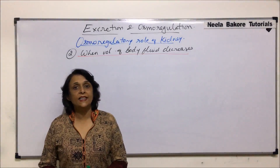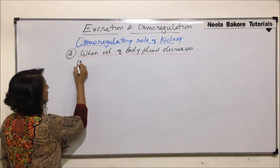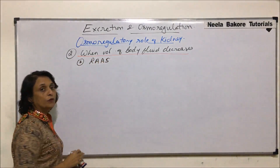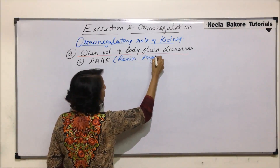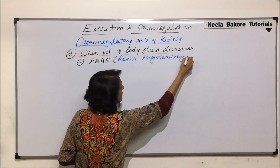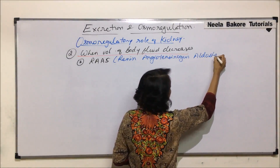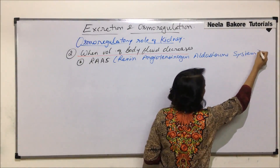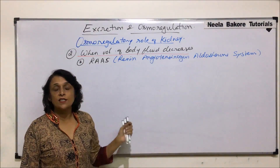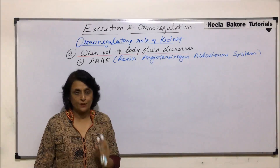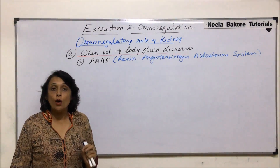We will now take up RAAS in detail, which is a mechanism to conserve water. The full form is renin-angiotensinogen-aldosterone system. In the previous segment we saw that renin is released from the juxtaglomerular cells of the juxtaglomerular apparatus. This system works when the body fluid volume is less.